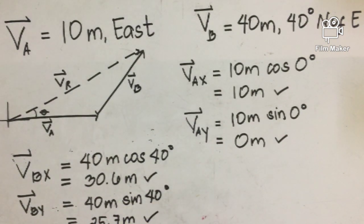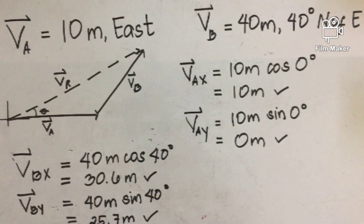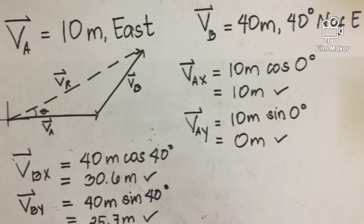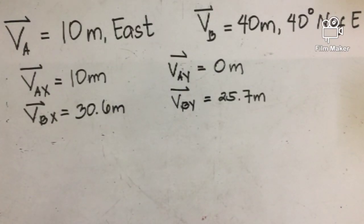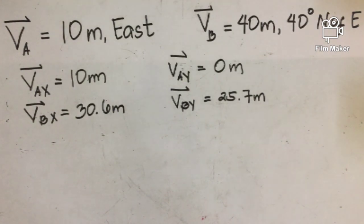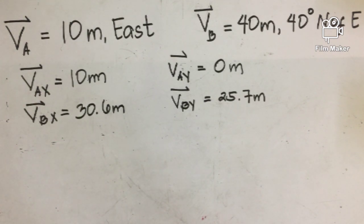Notice the difference between Vector A and Vector B: Vector B has two components — the x component and the y component. We have here the individual x and y components of Vector A and Vector B. The x component of Vector A is equal to 10 meters, and the x component of Vector B is equal to 30.6 meters. The y component of Vector A is equal to 0, and the y component of Vector B is equal to 25.7 meters.